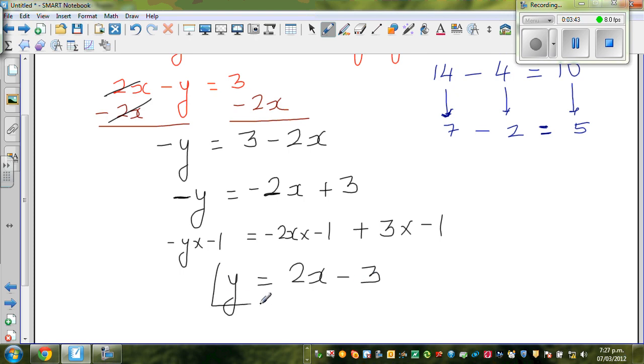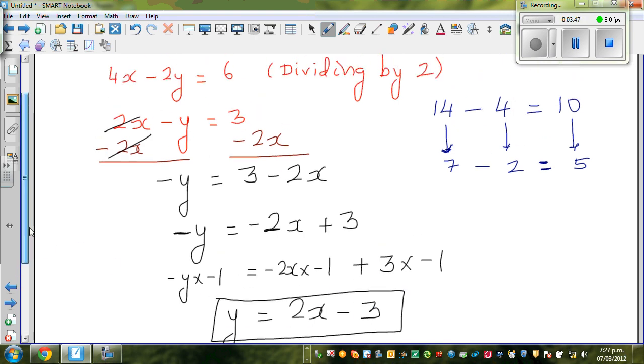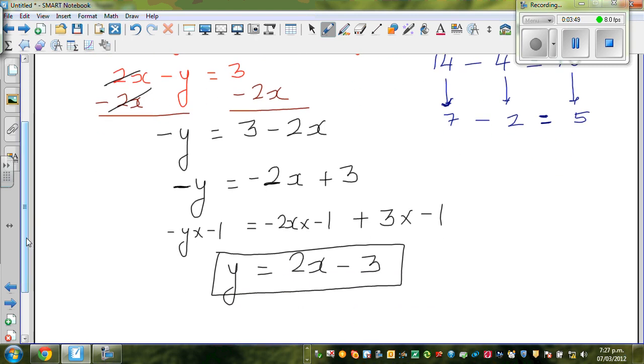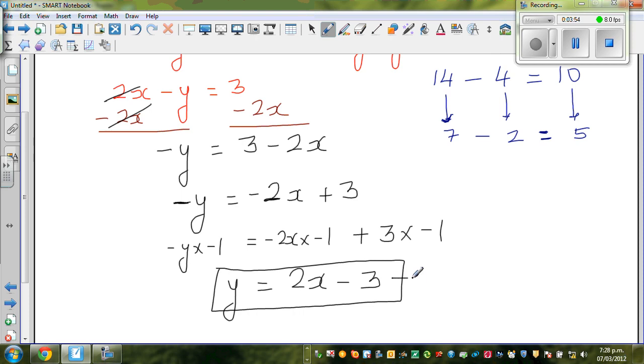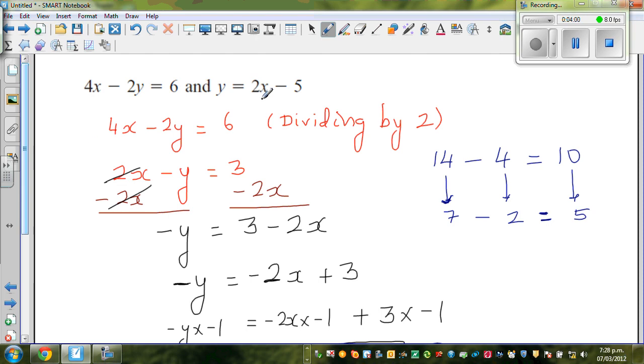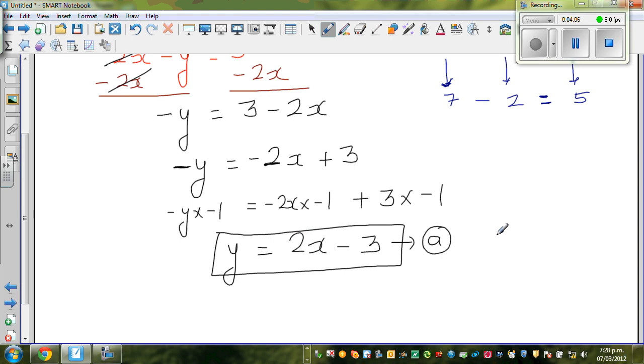This whole process was to change this in the y form. So I call this equation A. And the second equation is y equals 2x minus 5.